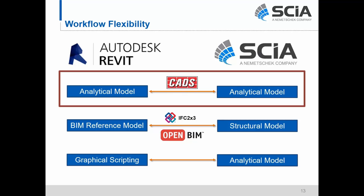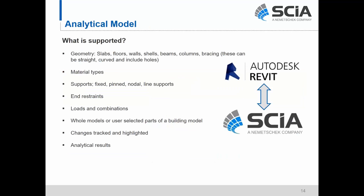The first workflow we'll explore is the direct analytical model workflow — a model workflow that sends the analytical model from Revit directly into analysis software. For our particular analytical link, we have a strategic partnership with Autodesk through authorized developer CADS, based out of the UK. This supports different geometry types: floors, walls, slabs, shells, beams, columns, bracings — all of which can be straight, curved, include holes and openings. Different materials, supports, end restraints, loads and load combinations are supported. You can send whole models or parts of models, track changes both back and forth from Revit into SIA, and also utilize analytical results inside Revit.